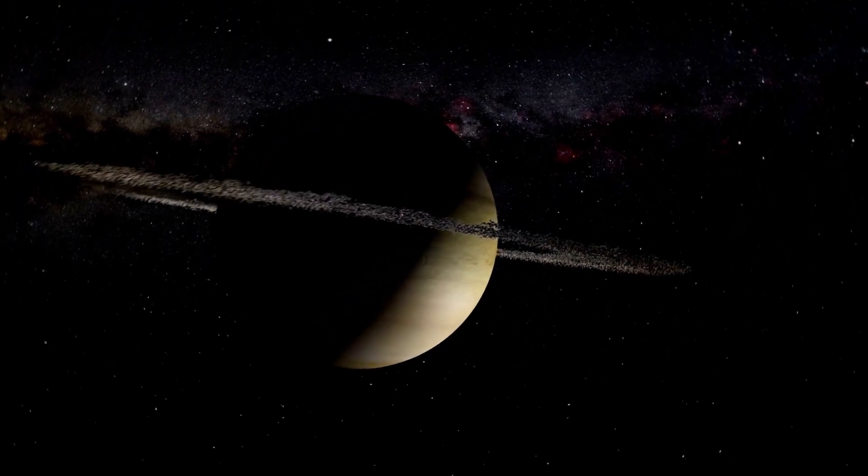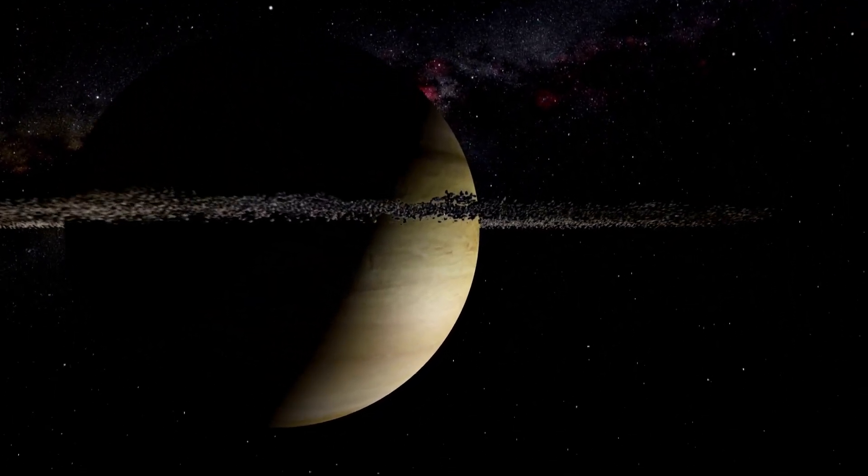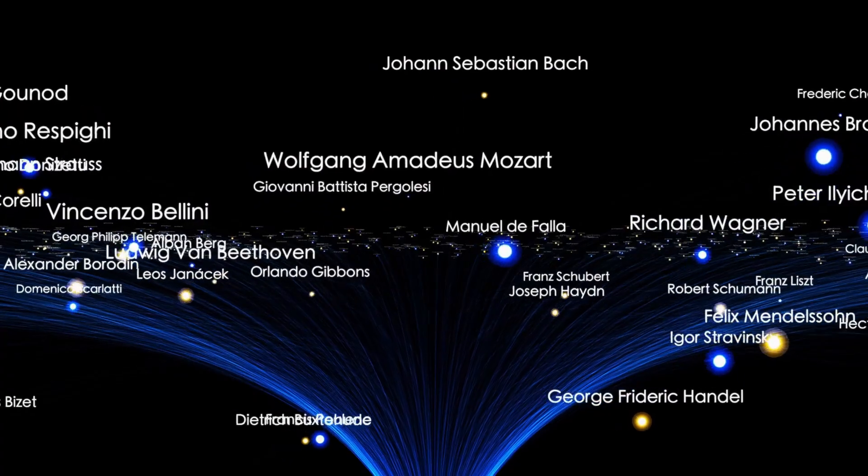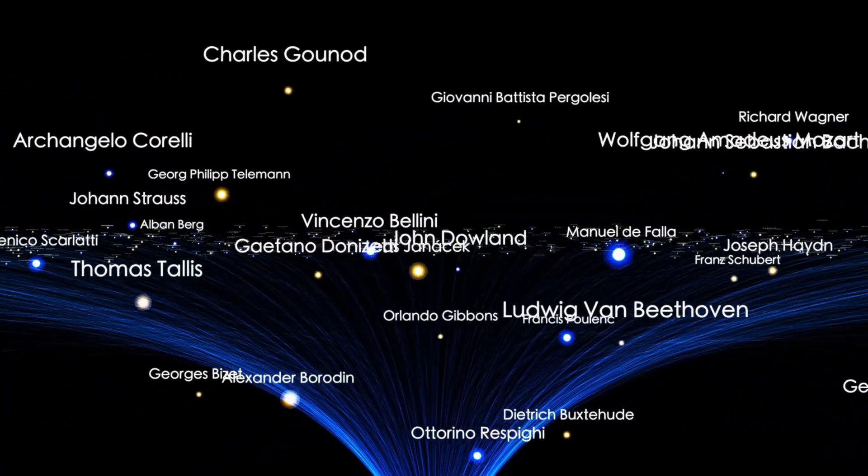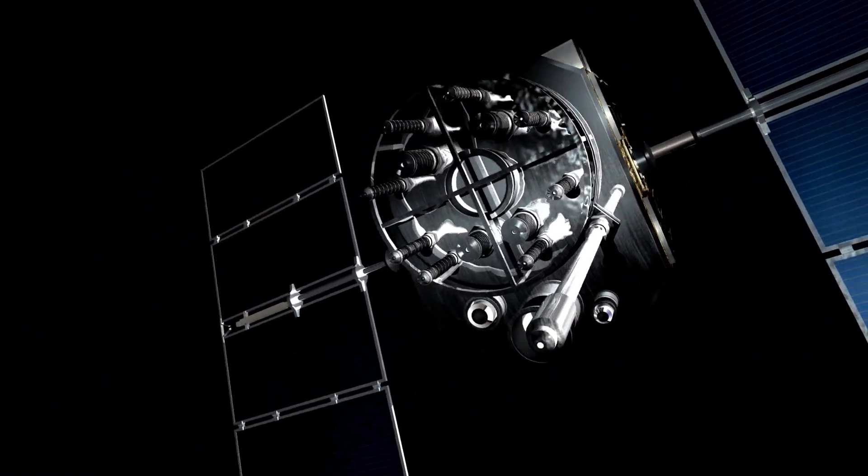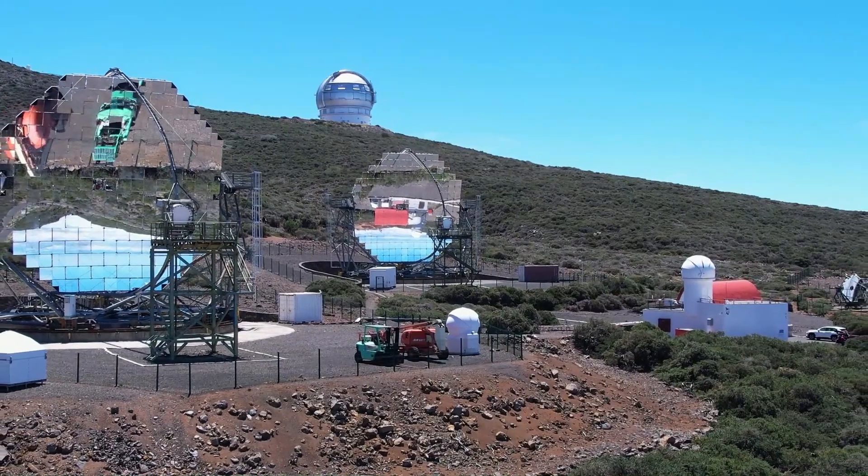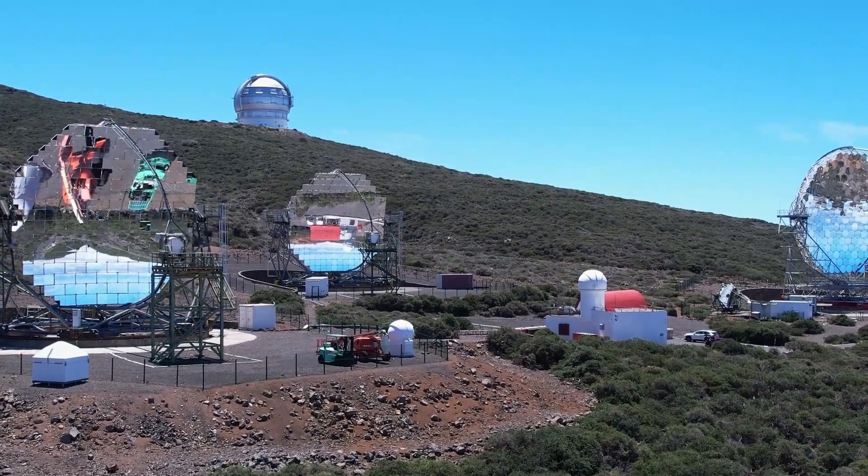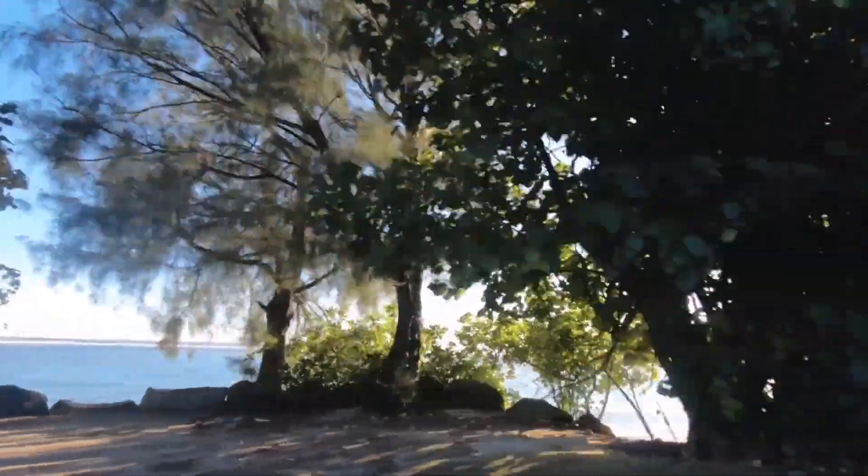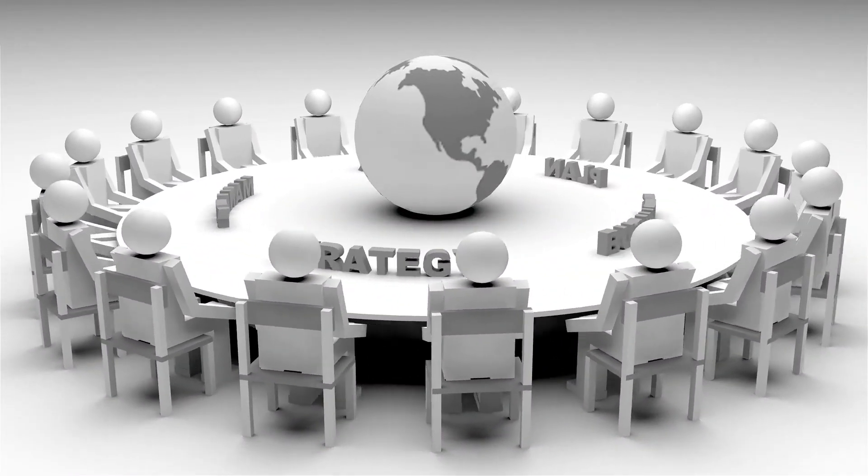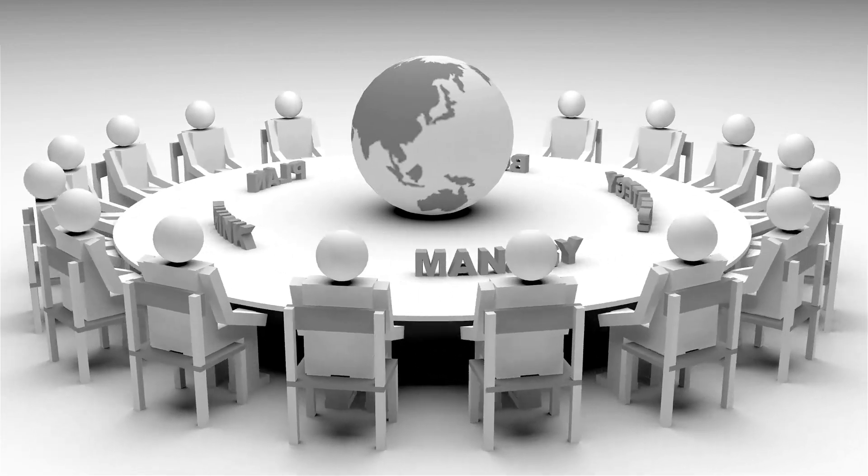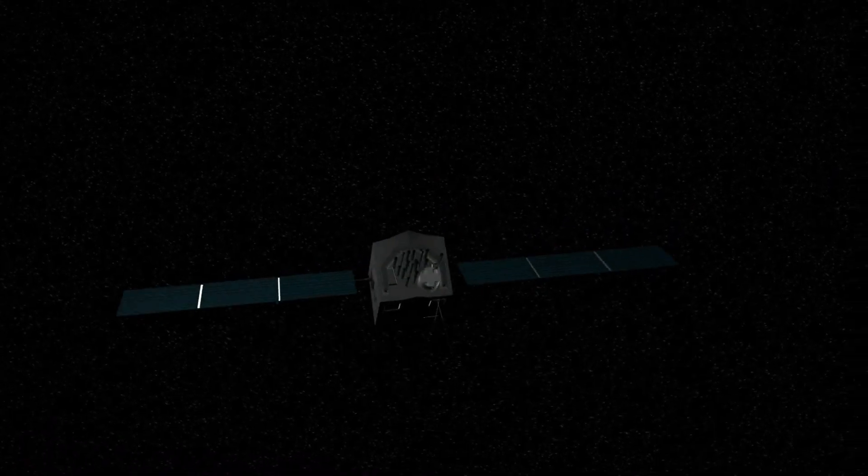The origin of Oumuamua raises even more troubling questions. Using the European Space Agency's Gaia spacecraft data, astronomers have now precisely traced Oumuamua's trajectory back to its origin point. When scientists ran Oumuamua's trajectory backward through this stellar database, they made a discovery that defies conventional astrophysics. The object came from what astronomers call the local standard of rest, but specifically from a particular region that's eerily devoid of the cosmic mechanisms needed to naturally eject objects at interstellar speeds.